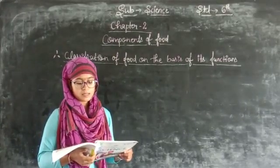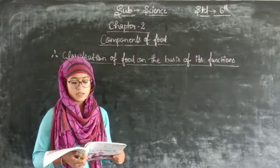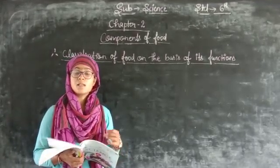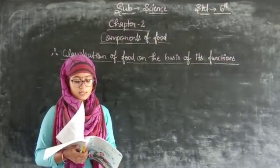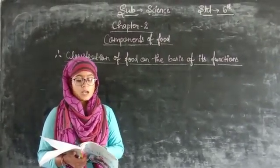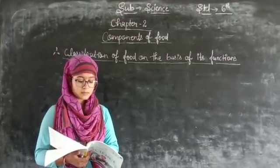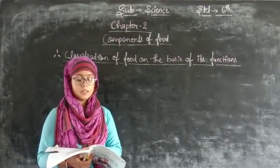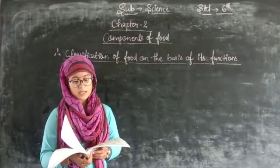And the third one is protective food. The food which protects the body against disease is called protective food. They include essential vitamins and minerals, like in fruits, vegetables, eggs, milk, fish, etc.